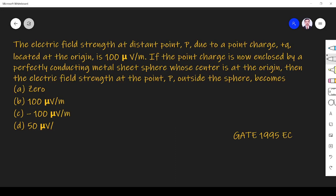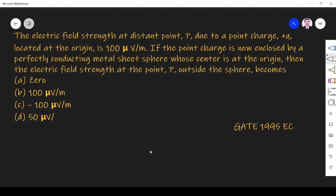The question is: the electric field strength at point P due to a point charge Q located at the origin is 100 microvolt per meter. So where is our charge located? Our charge Q is located at origin.